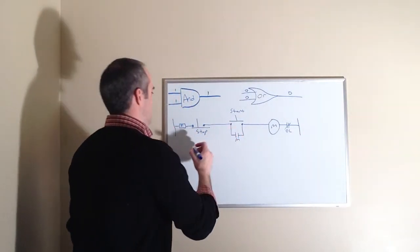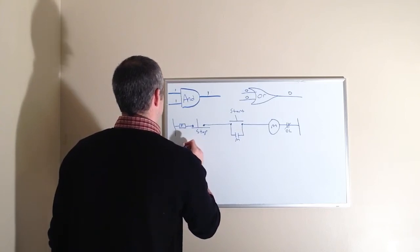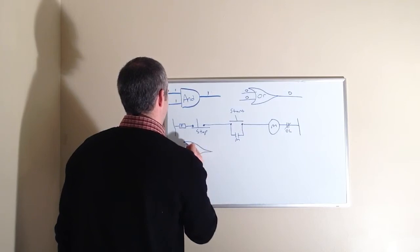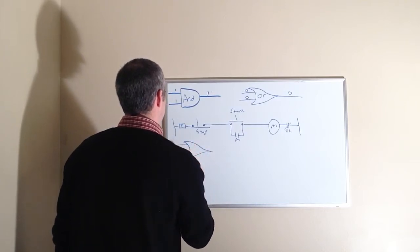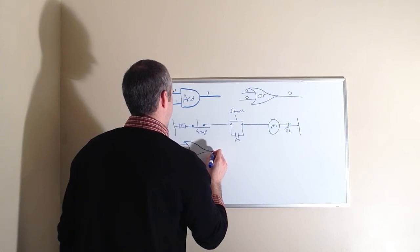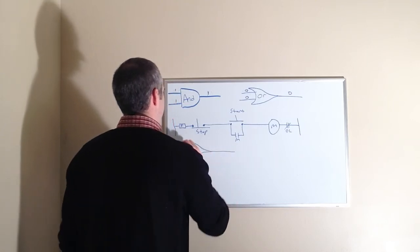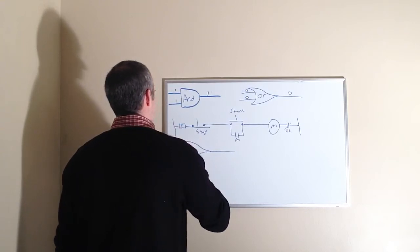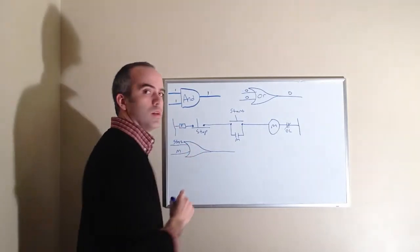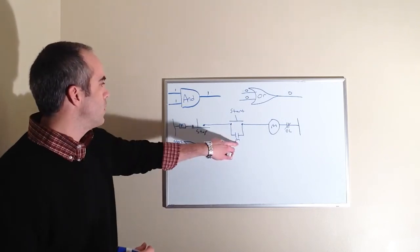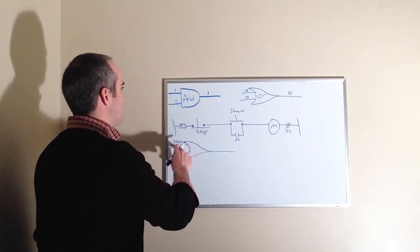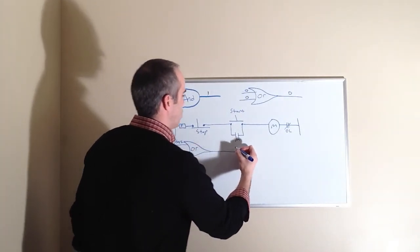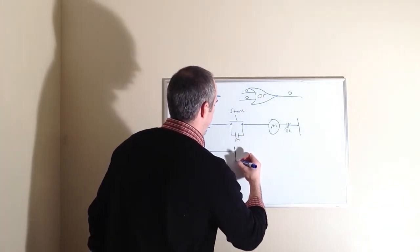So we're going to start here with the OR gate. Let's draw, we have our start button or our M-coil seal in and the M-contact here. This or this will produce an output on this OR gate.